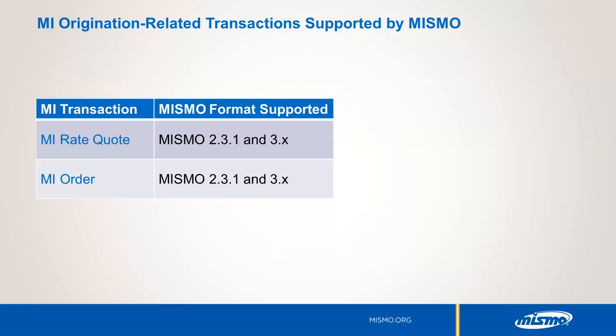In this course, we will focus on MISMO-based MI origination transactions. These transactions include the MI rate quote and MI order. MI companies do support multiple MISMO formats, typically version 2.3.1 for MI and version 3.x. Check with your MI trading partner to verify the specific version of MISMO they support and or prefer.